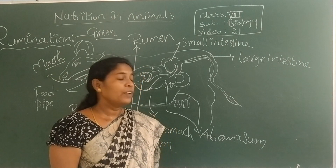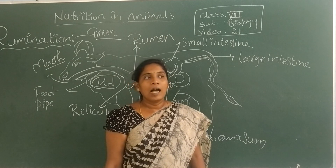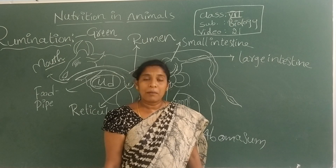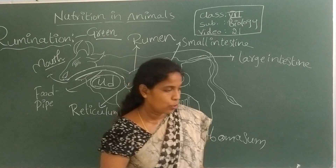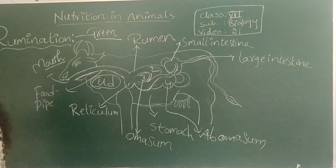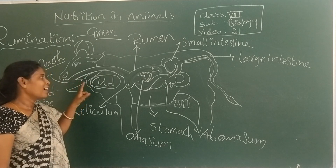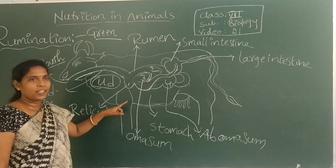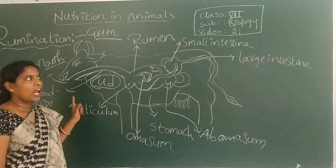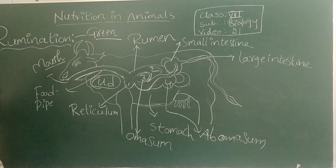So students, please note down this diagram and practice it. In your textbook, the parts are not labelled properly, so note down these parts. Read the textbook — it mentions rumination and ruminants but doesn't explain these parts in detail.